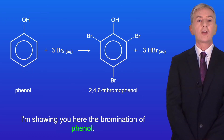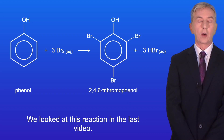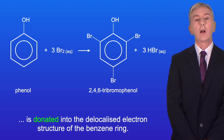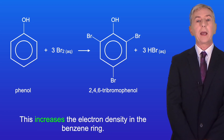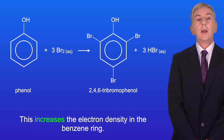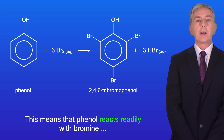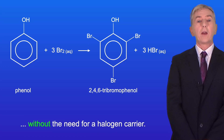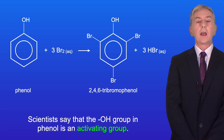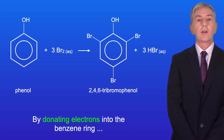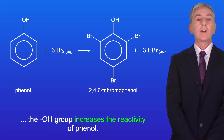I'm showing you here the bromination of phenol, which we looked at in the last video. In phenol, a lone pair of electrons in a p orbital on the oxygen atom is donated into the delocalized electron structure of the benzene ring. This increases the electron density in the benzene ring, and because of this increased electron density, the benzene ring in phenol can induce a dipole in bromine. This means that phenol reacts readily with bromine without the need for a halogen carrier. Scientists say that the OH group in phenol is an activating group — by donating electrons into the benzene ring, the OH group increases the reactivity of phenol.